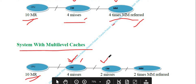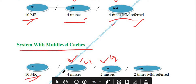Of those 4 misses from L1 cache, 2 requests will be fulfilled by the L2 cache. In L2 cache, 2 misses occur, and these misses will be fulfilled by the main memory — meaning main memory is referenced only 2 times. So in a system with multiple caches: 6 requests fulfilled in L1, 2 requests fulfilled in L2, and 2 requests fulfilled by main memory (RAM).